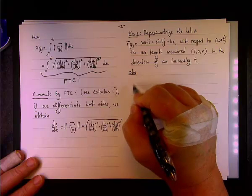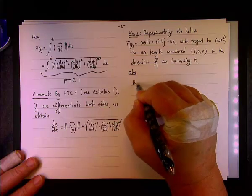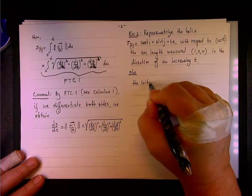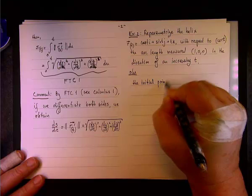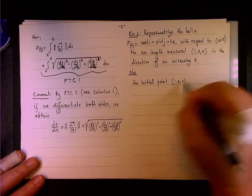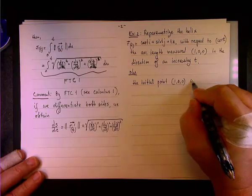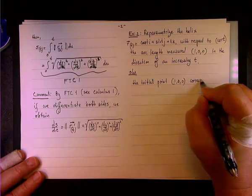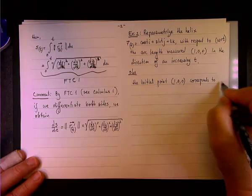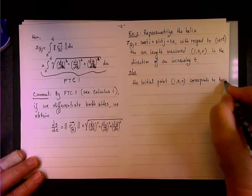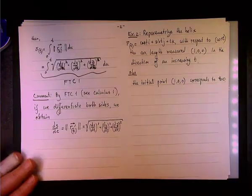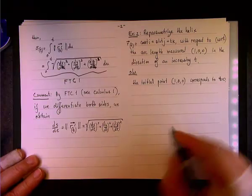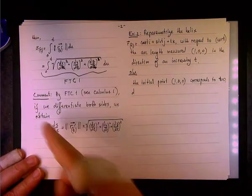First of all, we're going to say that the initial point (1, 0, 0) corresponds to what value of t? It corresponds to t equals 0.